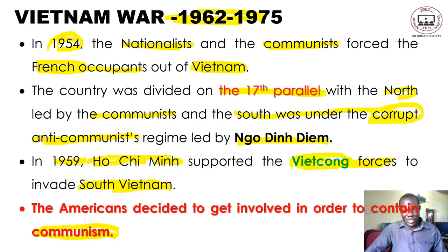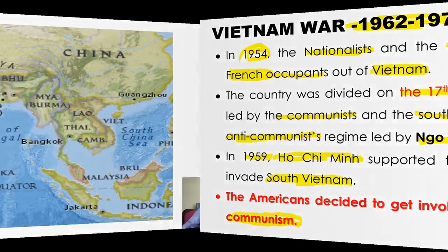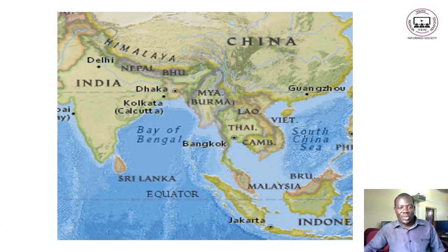The Americans decided to get involved in order to contain and avoid the spread of communism. They did not support the corruption of Diem's government, but the aim of their involvement was to stop the spread of communism.